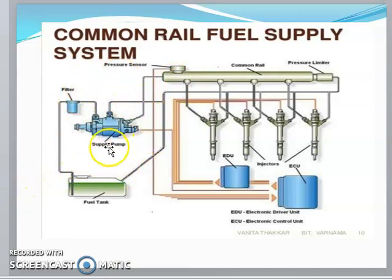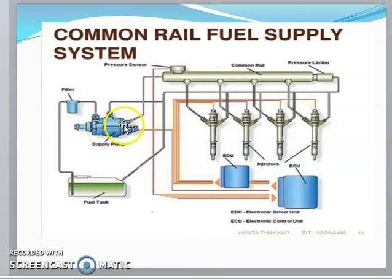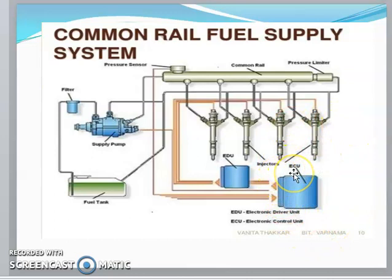In the CRDI engine, the supply pump delivers fuel to the header fuel tubes, where all nozzles receive similar pressure during combustion. Fuel from the fuel tank passes through a filter where dust is removed, then goes to a sub-pump which supplies it to the common rail fuel supply system, controlled by the ECU (Electronic Control Unit).